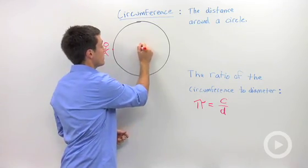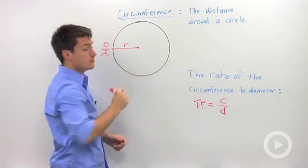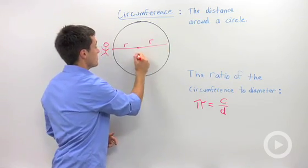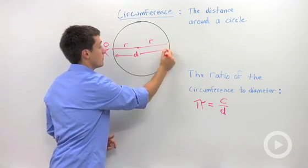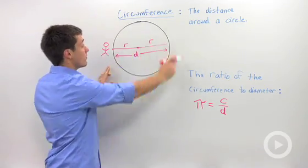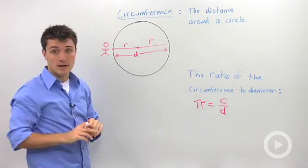So if I wrote in a radius, remember that if you have two radii, that equals one diameter. So pi is that ratio in a circle of its circumference to its diameter.